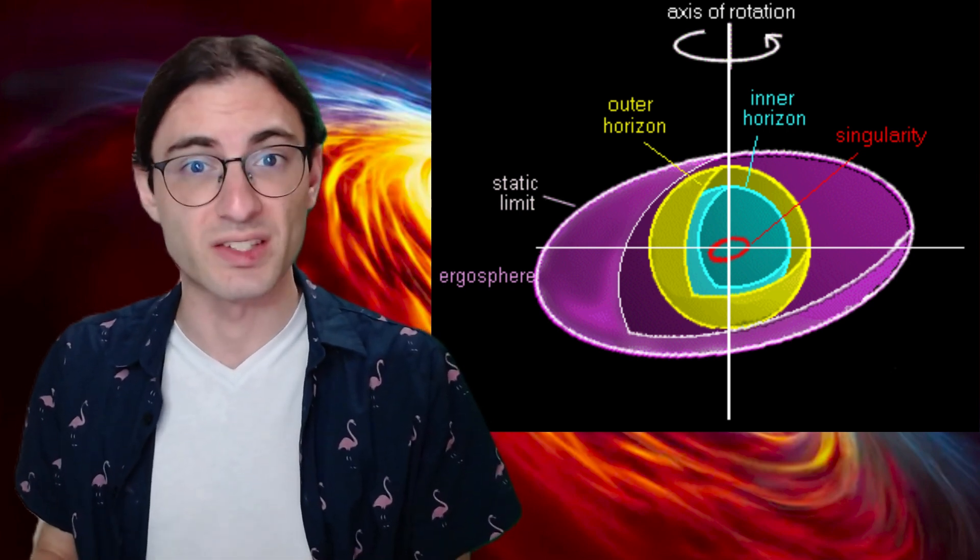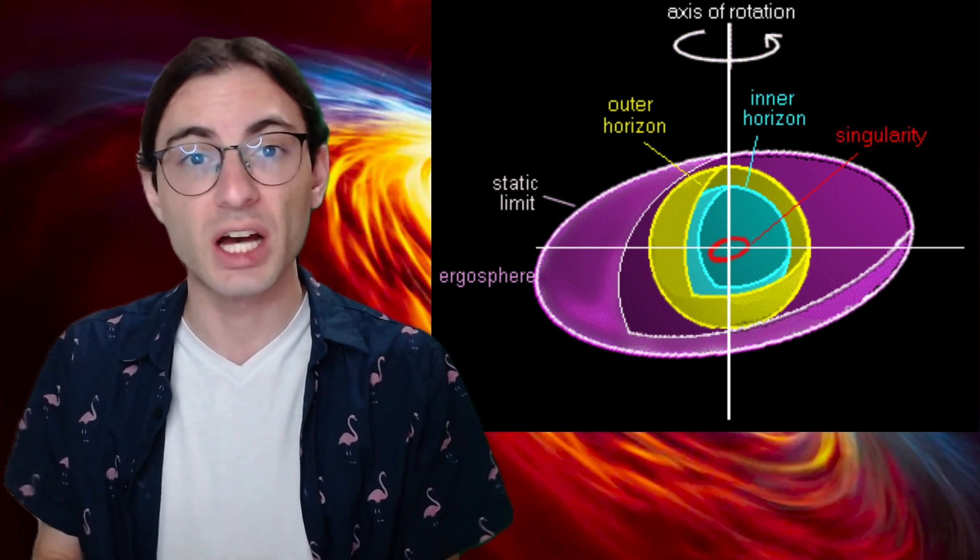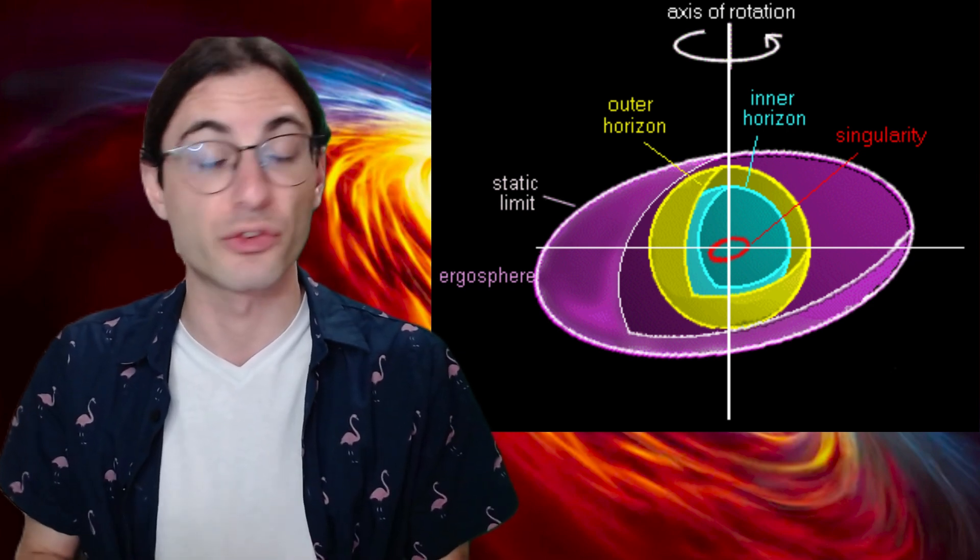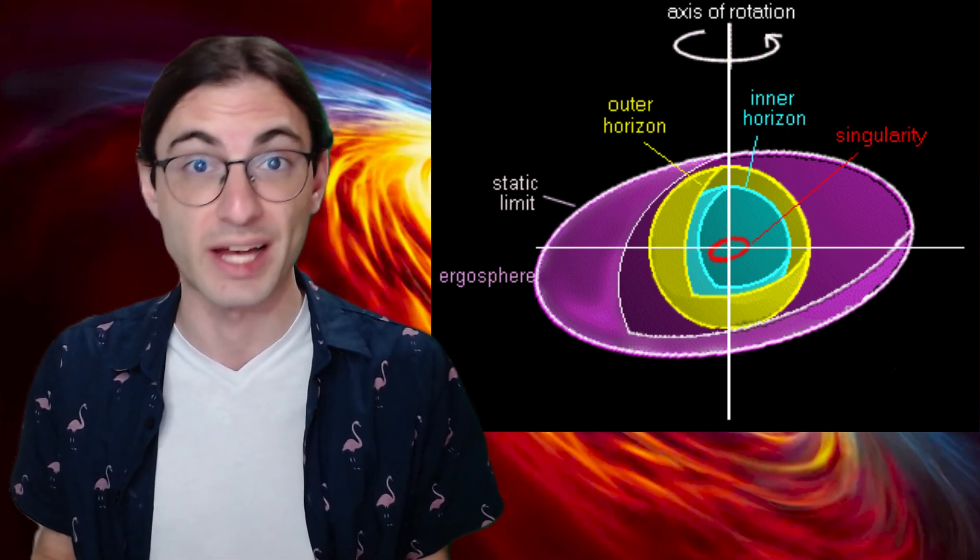If this solution were realized in the real world, it would be an eternally unchanging, rotating black hole surrounded by a vacuum and otherwise flat spacetime. Of course, real black holes aren't like this. They're not infinitely old, they have stuff falling into them all the time, they merge, they move around, they're dynamical.